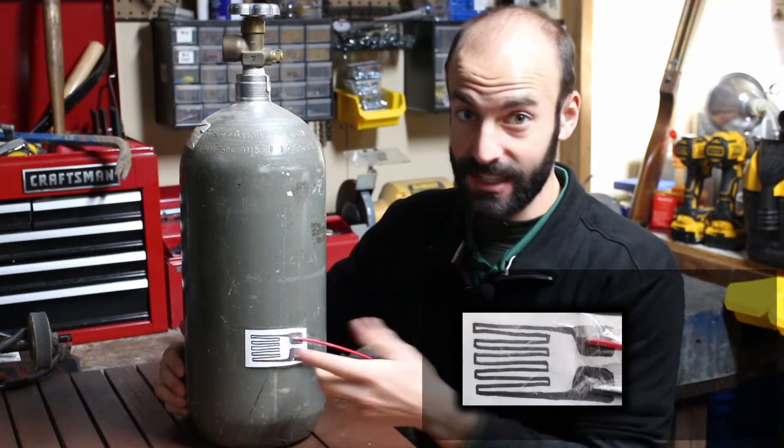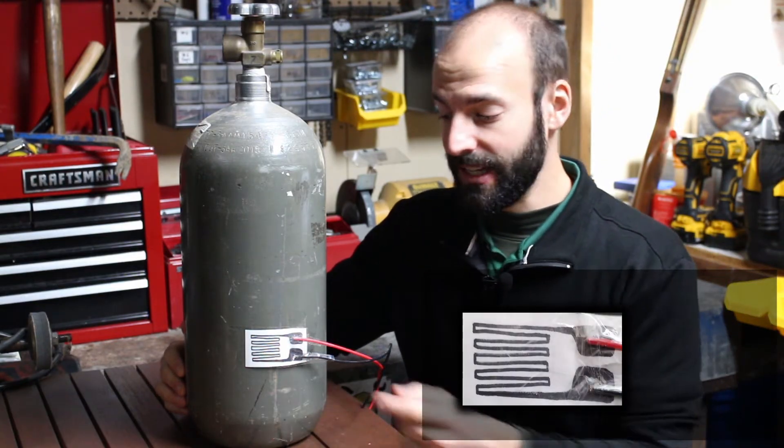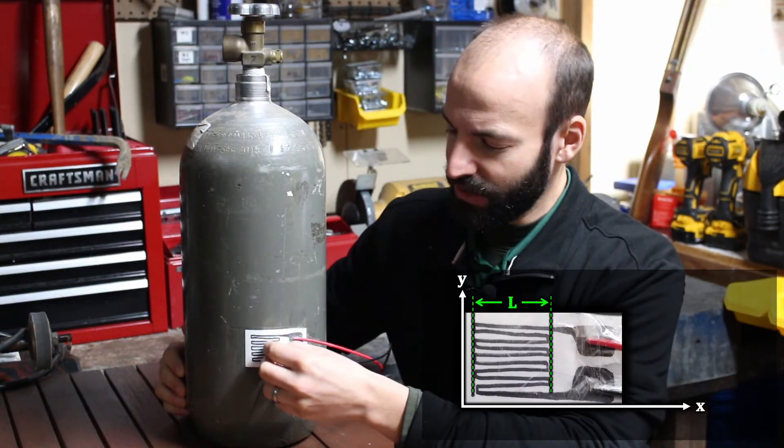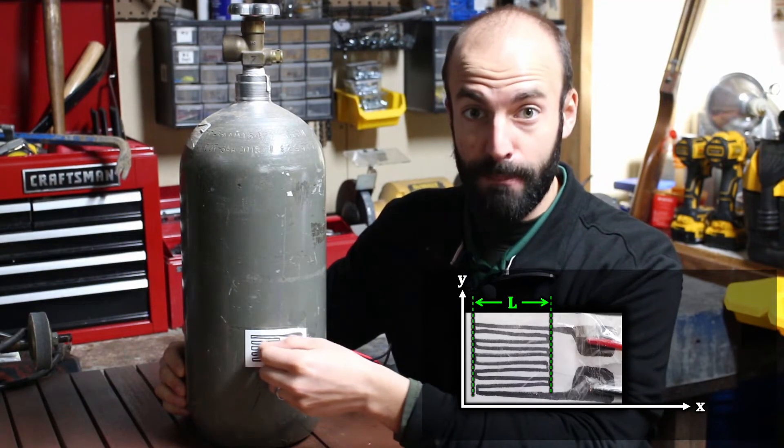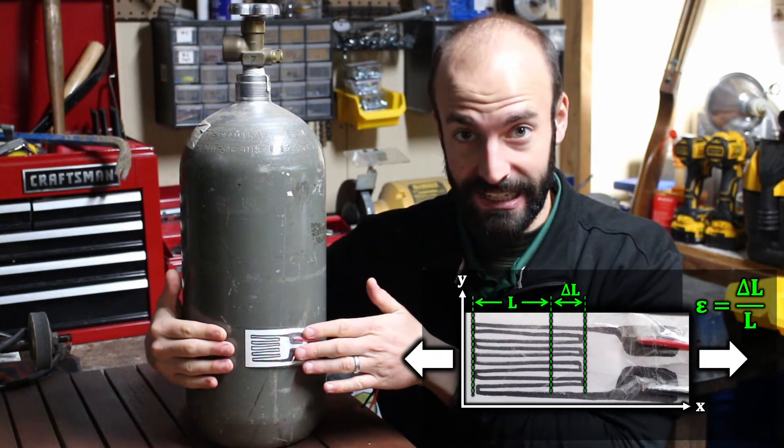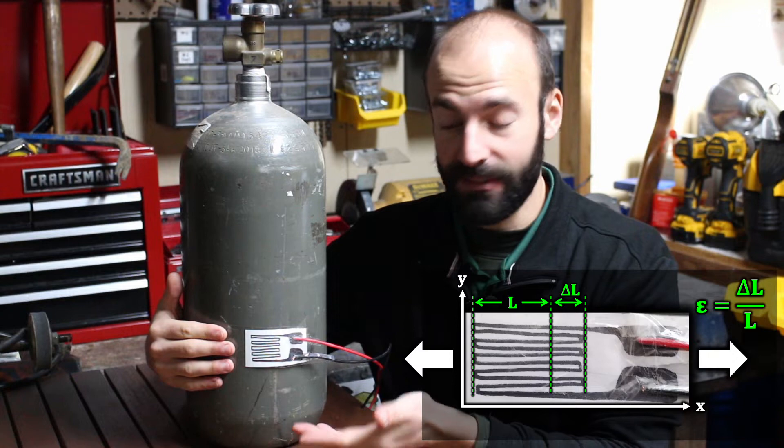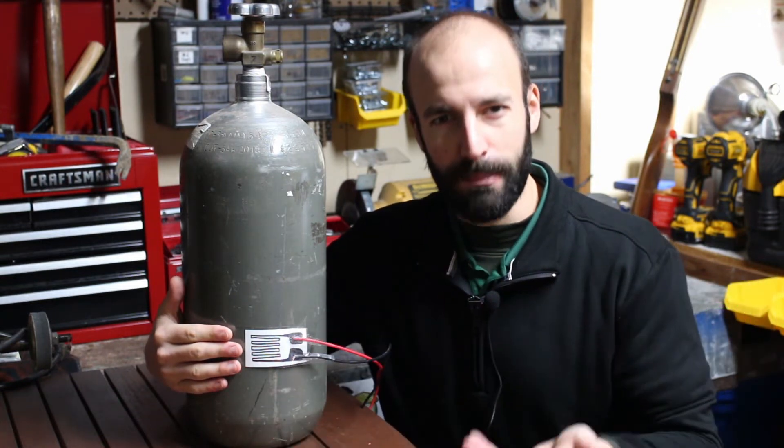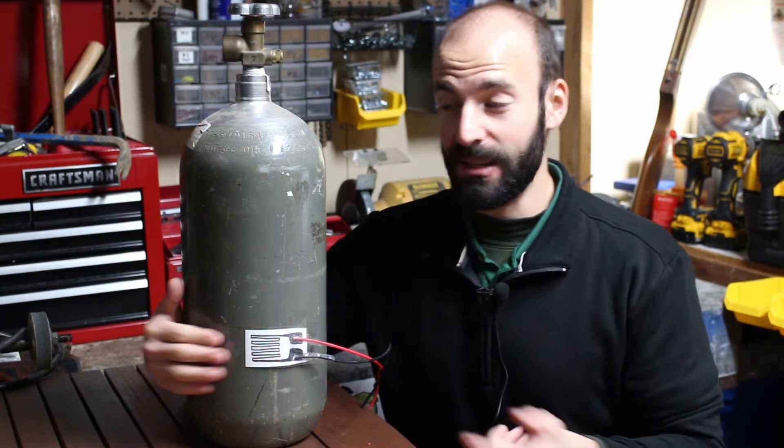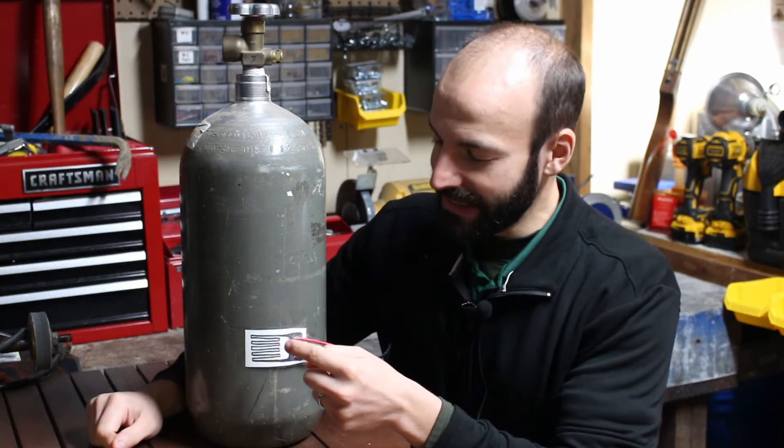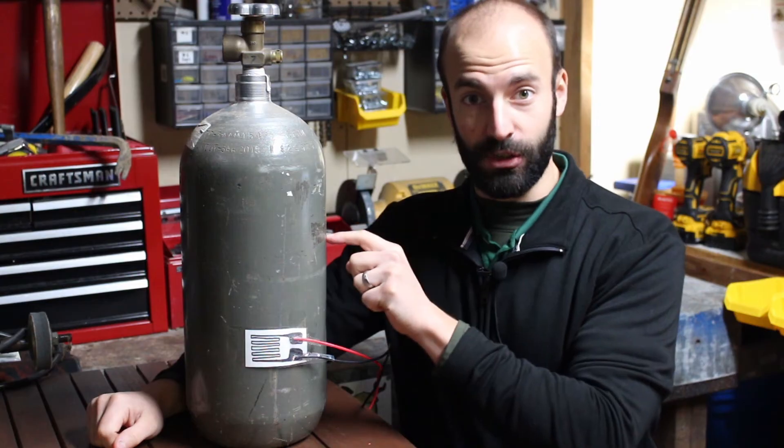And this strain gauge is giving us strain. Now strain is a metric that relates the stretchiness of a material, how much the area being measured has elongated in the direction of the strain gauge relative to its original length. It's something we can measure, and that's easier to measure than the internal pressure. So how do we relate the strain to the internal pressure?